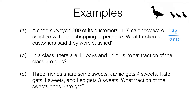There were 200 customers and we treat each of these customers as equal, and out of those, 178 said they were satisfied. So the fraction that was satisfied is 178 over 200, or 178 two-hundredths. Now we haven't been asked to simplify this fraction, but we can do — this will simplify to 89 over 100, so 89 hundredths.